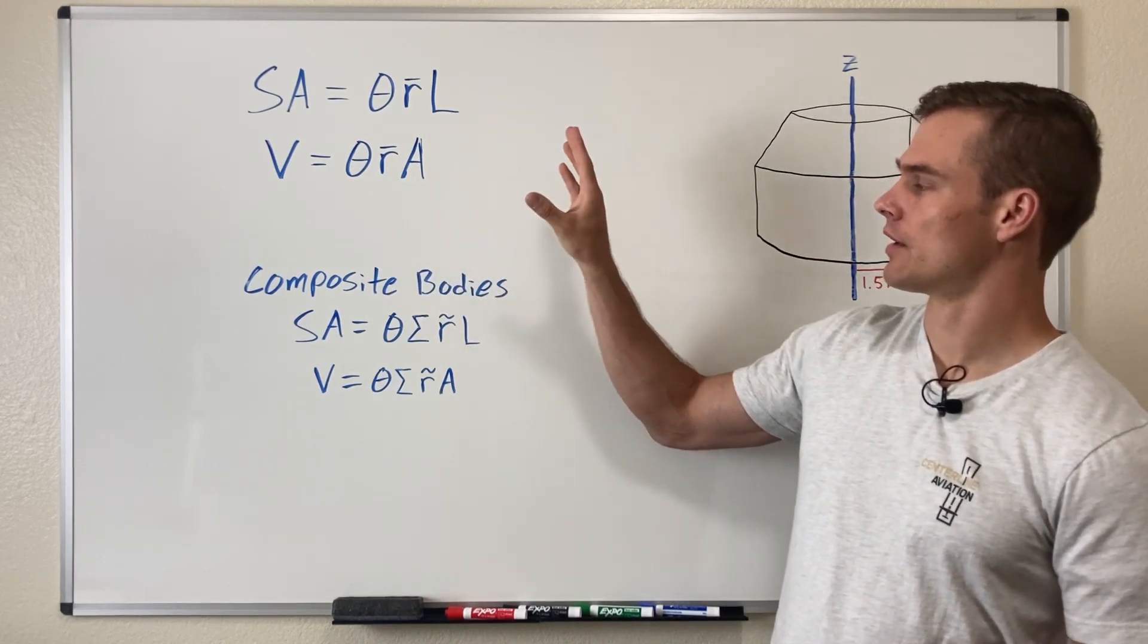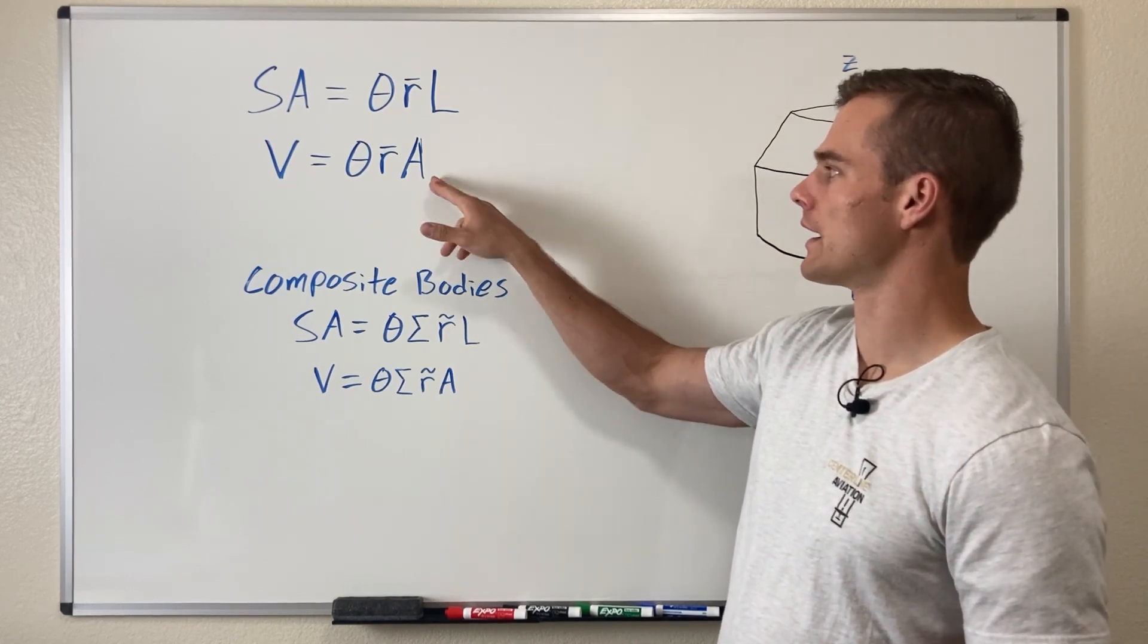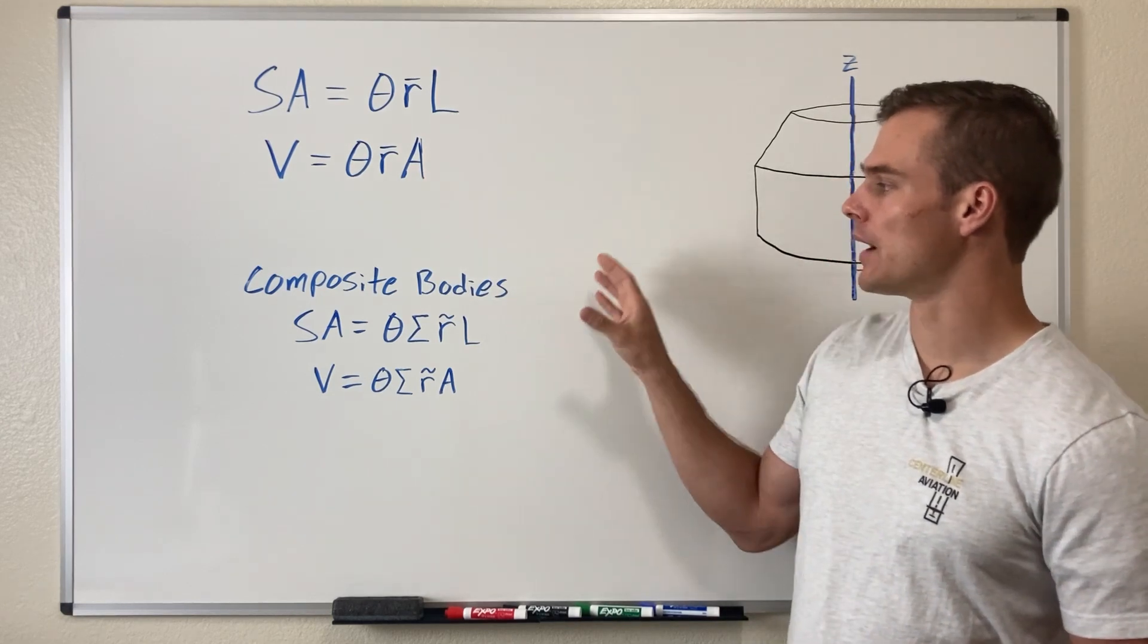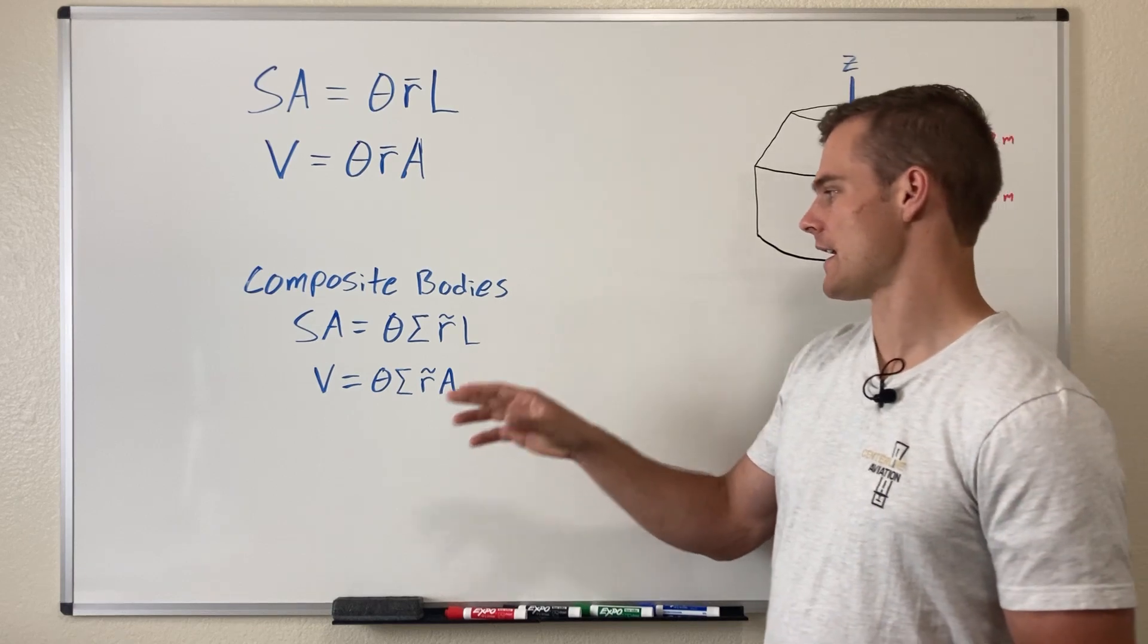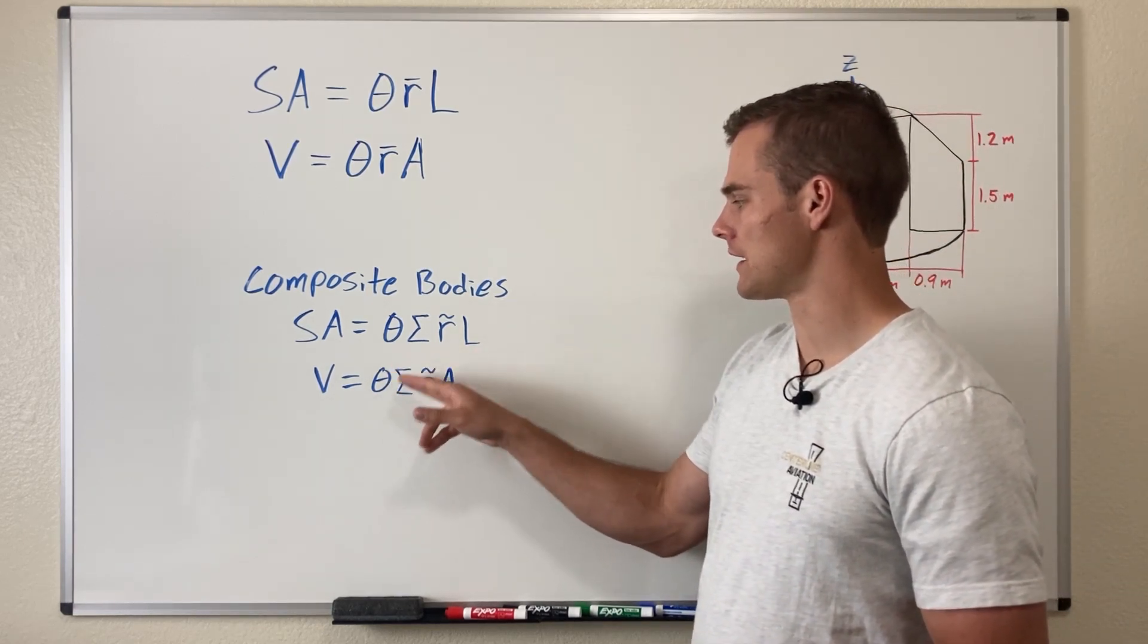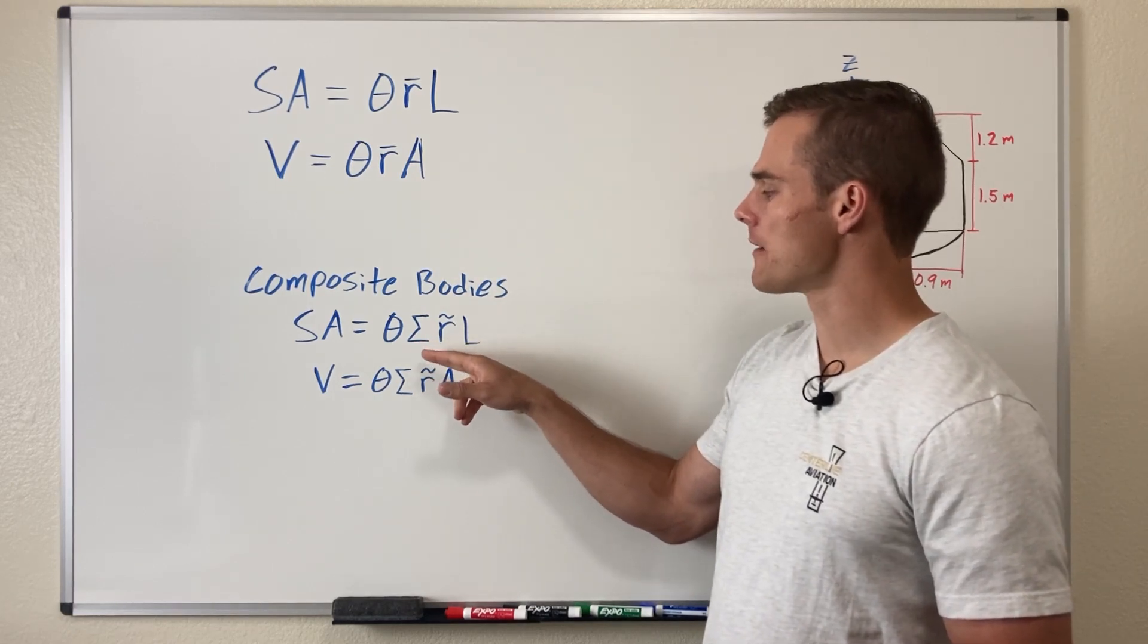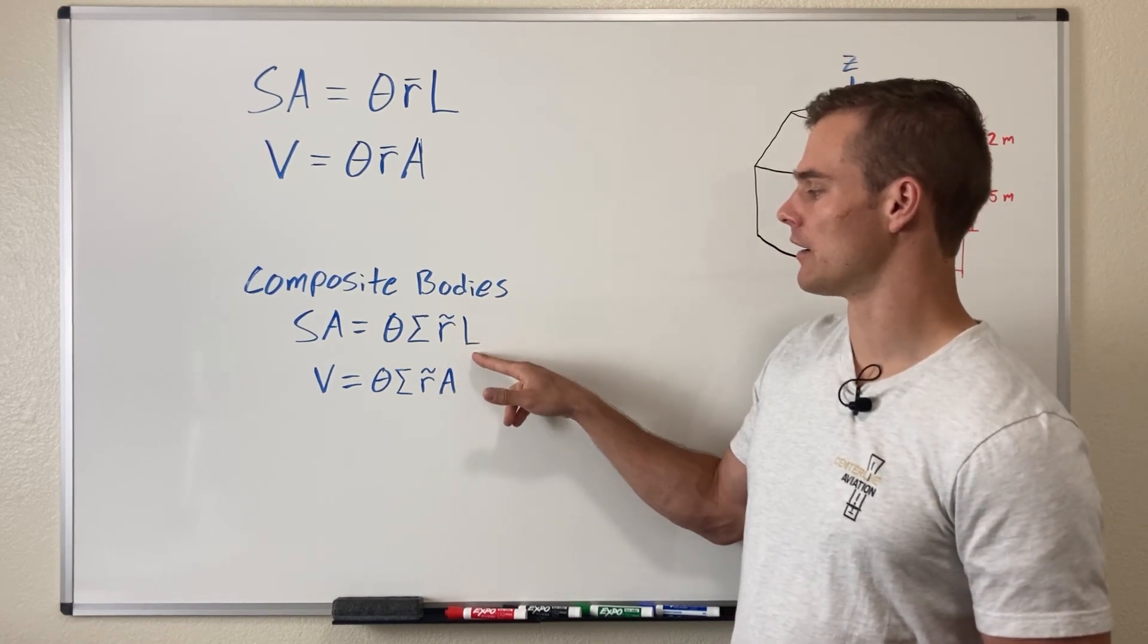So those are the equations if we just have one area and one line. But this also works with composite bodies. We have our surface area equation where theta equals the same thing as before, and then multiply that by the sum of R tilde times L.